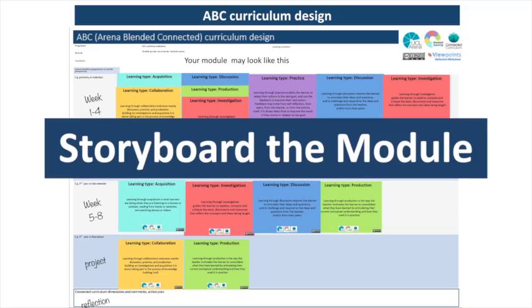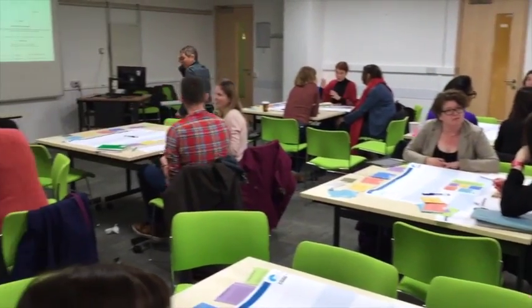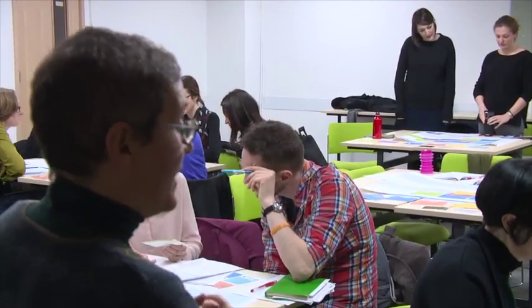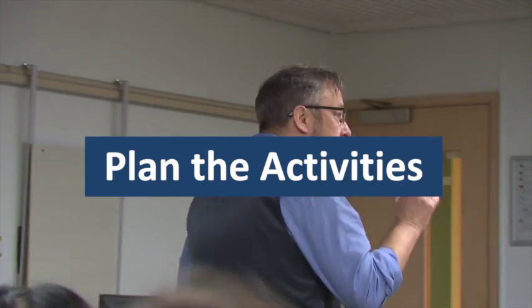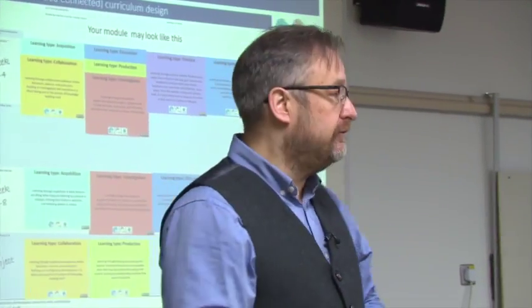Next, storyboard the module structure week by week — 30 hours in total. The most important stage is to select and order the range of activities. This goes quite quickly; it seems like a big task, but you've already done most of the main thinking. It's really just turning these ideas into activities.